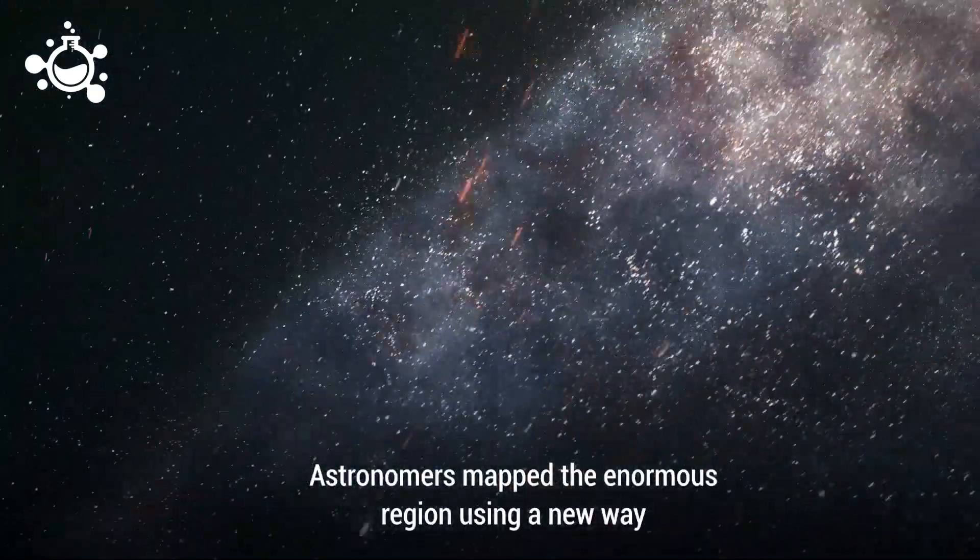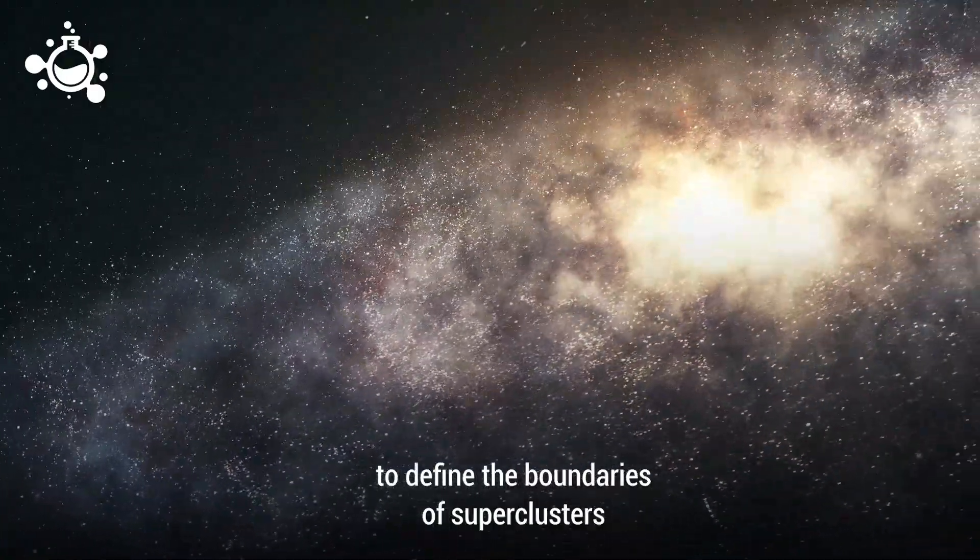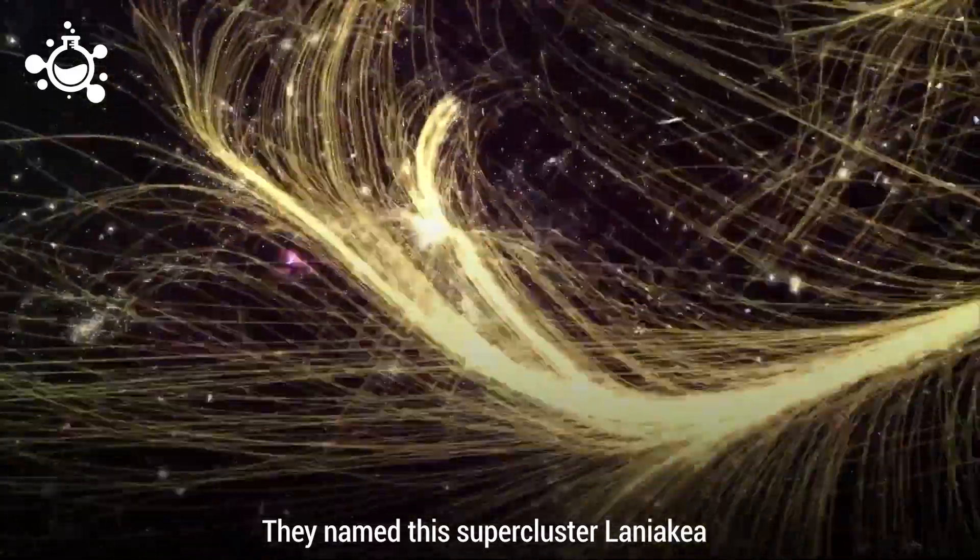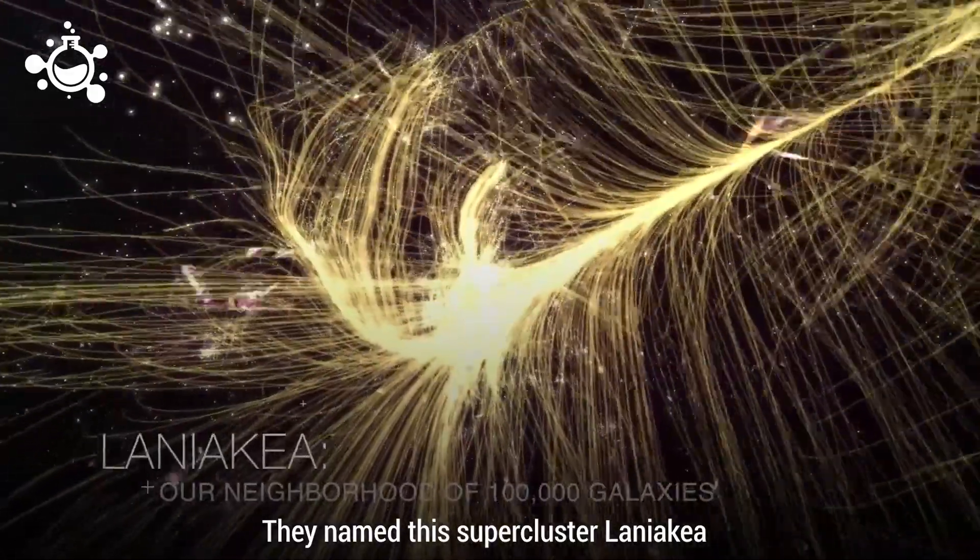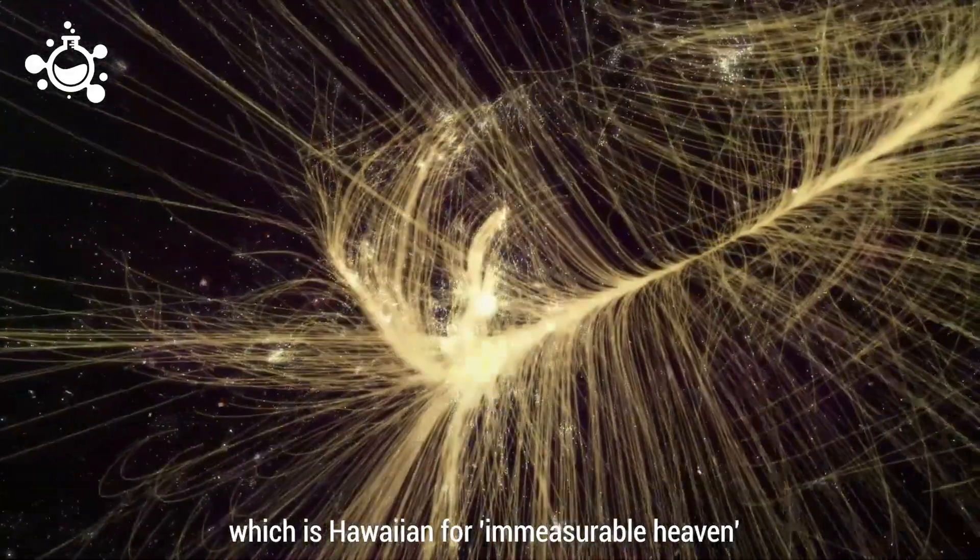Astronomers mapped the enormous region using a new way to define the boundaries of superclusters. They named this supercluster Laniakea, which is Hawaiian for immeasurable heaven.